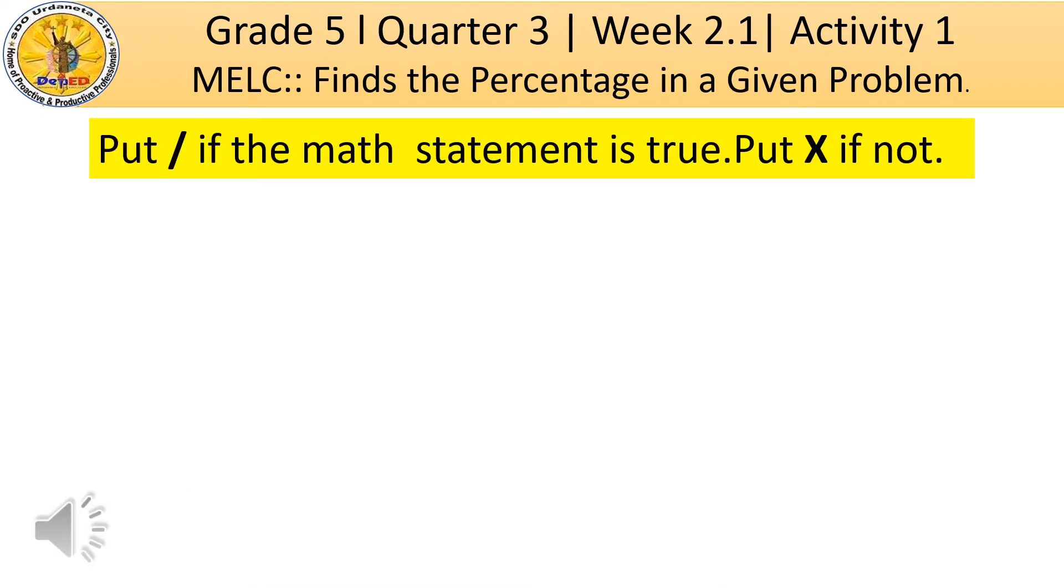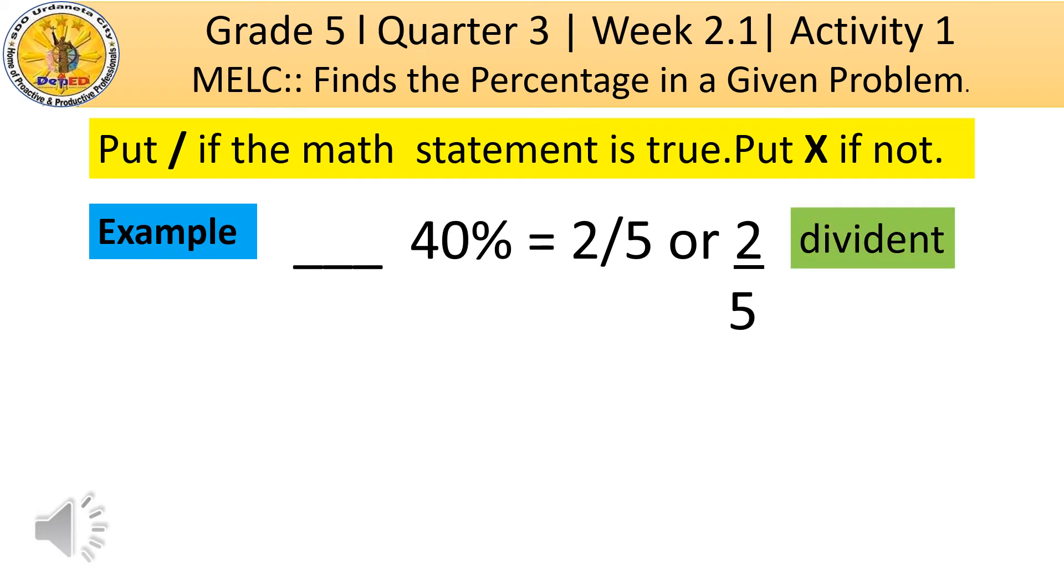In the direction of activity 1B, it's stated that put check symbol if the math statement is true. Put wrong symbol if not. Example, let us find out if 40% is equal to or equivalent of 2 over 5. In 2 over 5, our dividend is 2 and our divisor is 5.